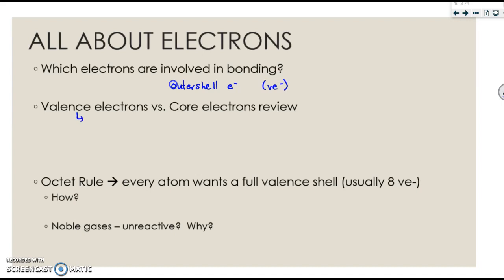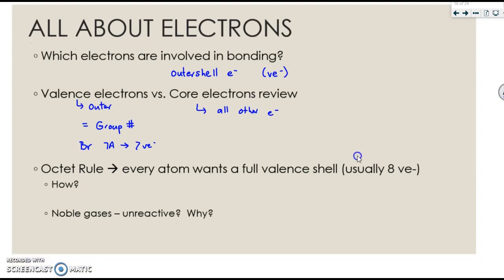We reviewed this, or we talked about this in a previous unit. Valence electrons are your outer electrons. They are equal to the group number that they're in. So for example, Br is in 7a. So it has 7 valence electrons. Your core electrons are all the other ones. They don't play a role in bonding, so we really don't care about them at this point.